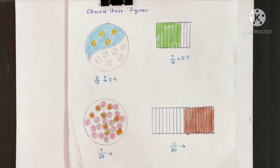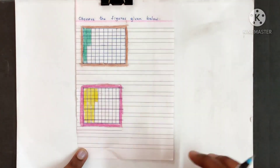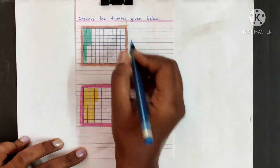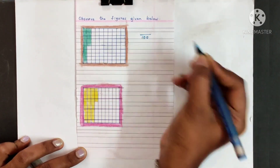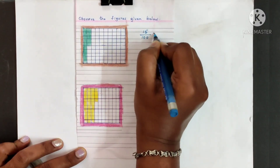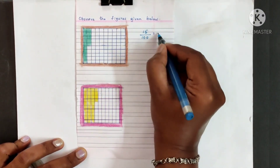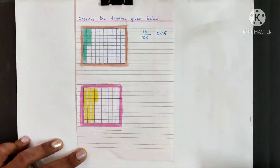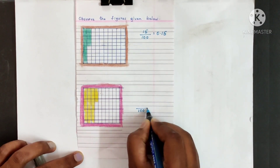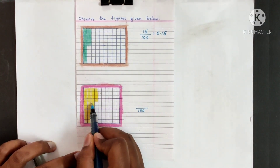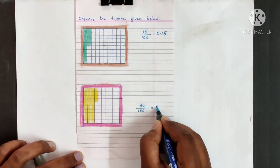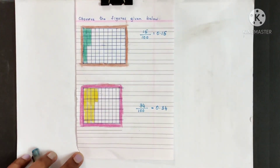So before moving on to that, let us see one more example. What is the fraction for this shaded portion? Now totally here there are 100 blocks. Out of 100 blocks, 15 are shaded, so we know to write this in decimal fraction as 0.15. Same way here, out of 100 blocks, 34 are shaded, so this fraction can be written as 0.34 in decimal fractions.